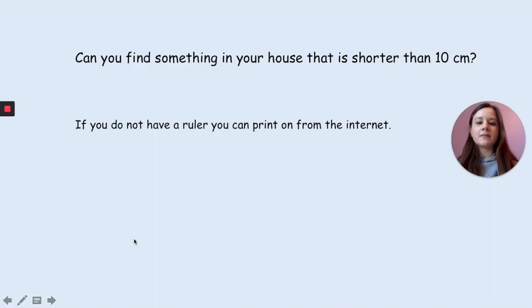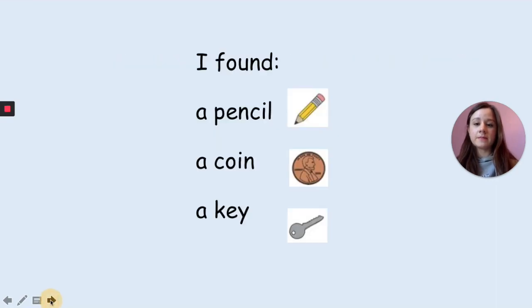Now can you find something in your house that is shorter than 10 centimeters? If you don't have a ruler at home that's okay, you can print one from the internet and try to use that. Remember we're looking for something in our house that is shorter than 10 centimeters. I'm going to do it as well. Pause the video to find some things. I found a pencil, a tiny short pencil, a coin, some money, and my house key is smaller than 10 centimeters.